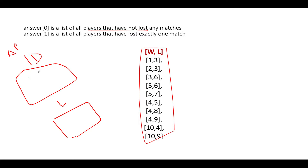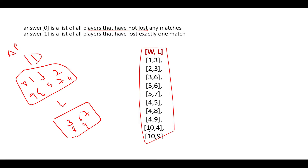Starting the iteration: we have 1 and 3 — add both to AllPlayerSet; 3 goes into LoserSet. Next, 2 and 3: 2 is added to AllPlayerSet, 3 is already present. Then 3 and 6: 3 is already in AllPlayerSet, add 6 to AllPlayerSet and to LoserSet. Then 5 and 6: 5 is added to AllPlayerSet. Then 5 and 7: 7 is added to AllPlayerSet and LoserSet. Then 4 and 8: 8 is added to AllPlayerSet and LoserSet. Then 4 and 9: 9 is added to both. Finally 10 and 4: 10 is added to AllPlayerSet; 4 is already in LoserSet.